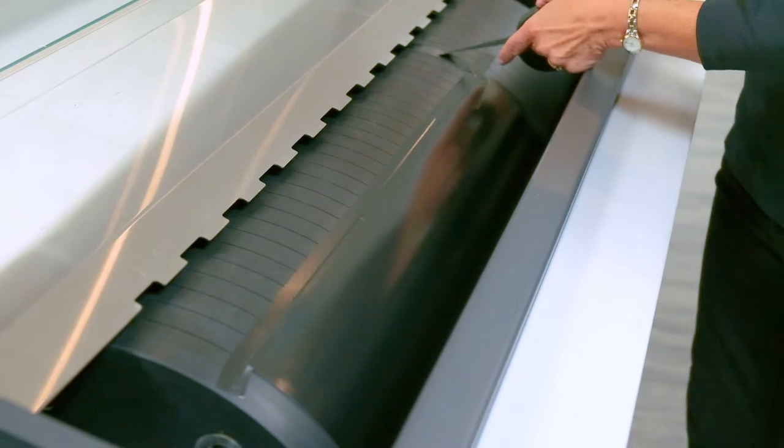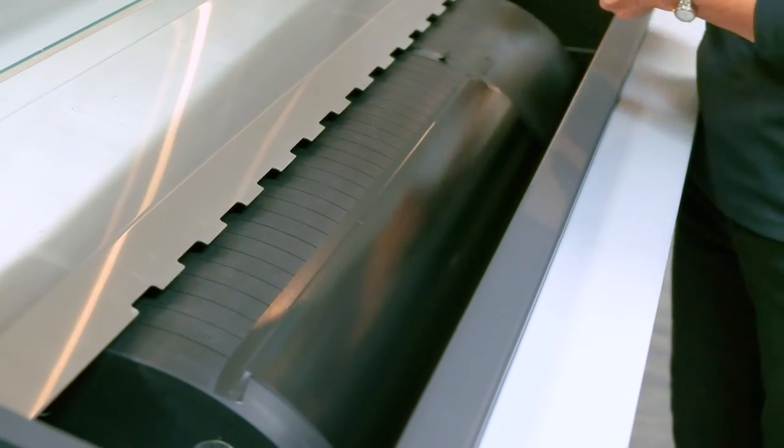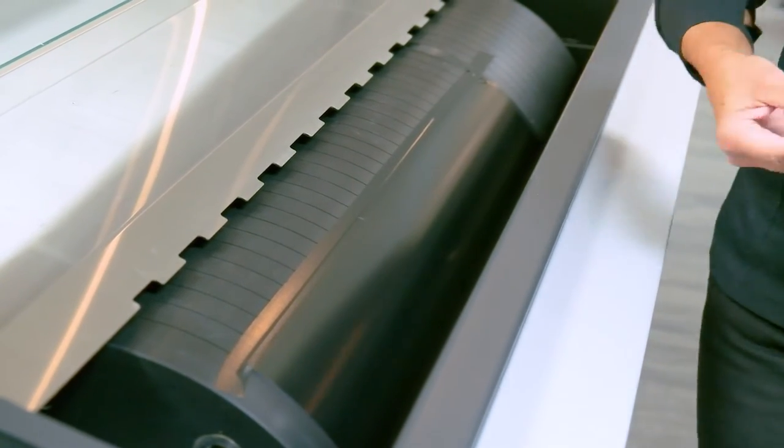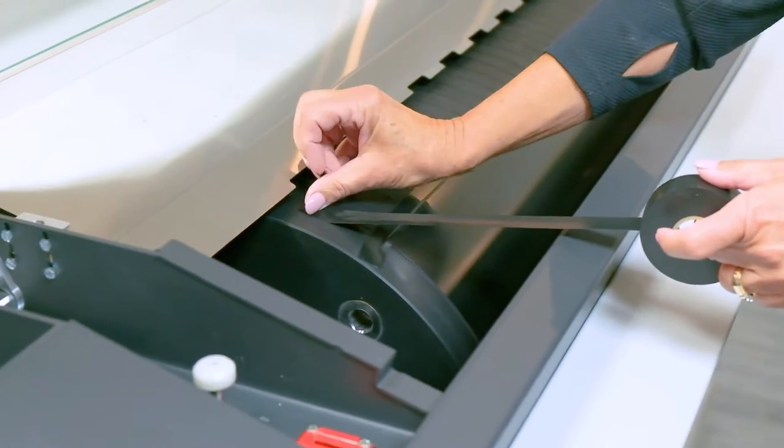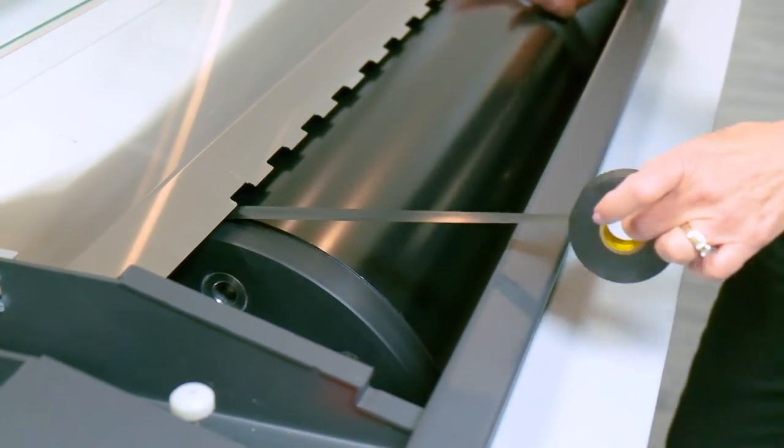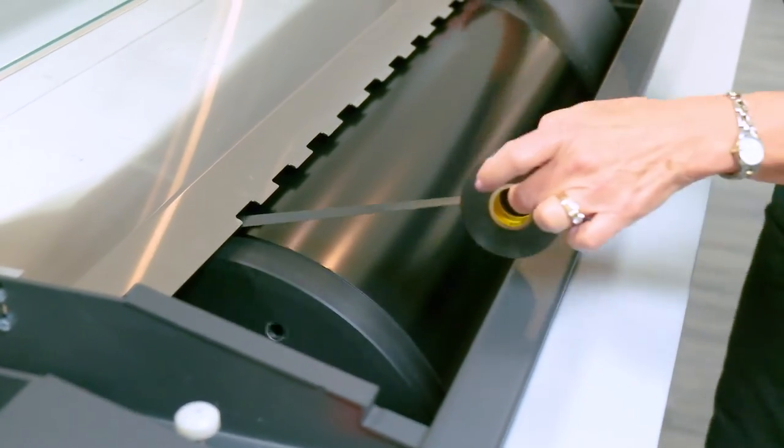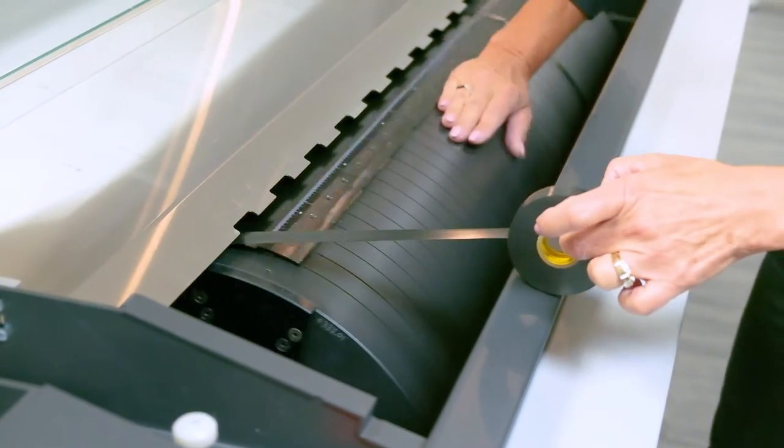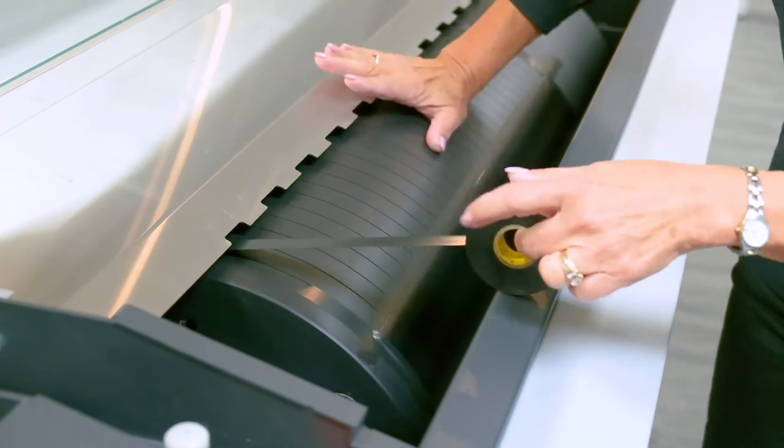It's recommended the tape extend all the way around the drum to secure it in place while the drum is rotating during the imaging process. If the plate were full size, it could just be clamped at both the head and tail without any taping required. Full size also allows for faster imaging time.